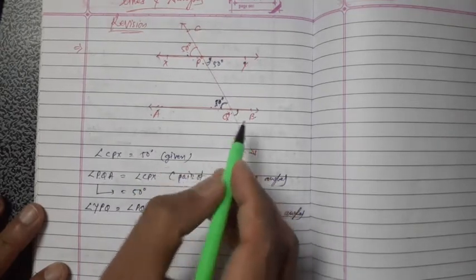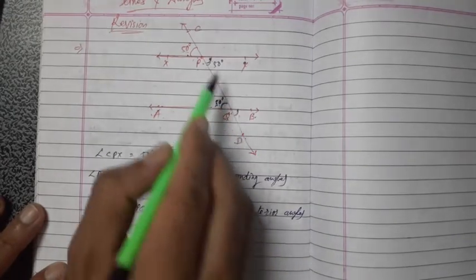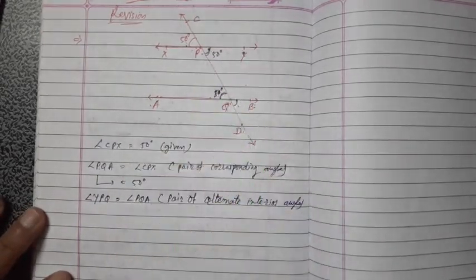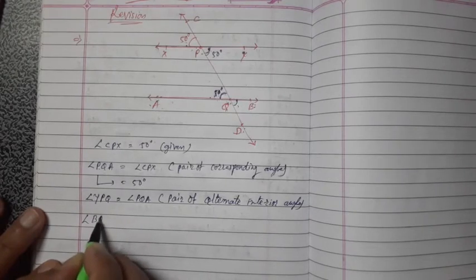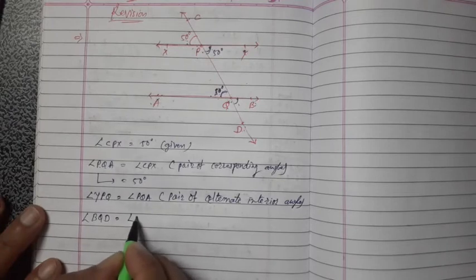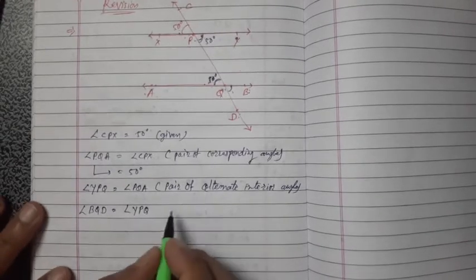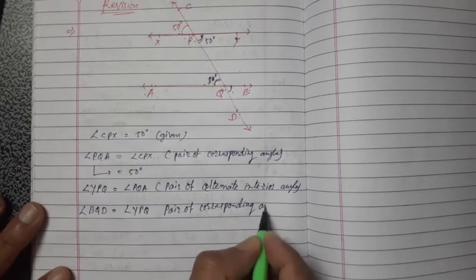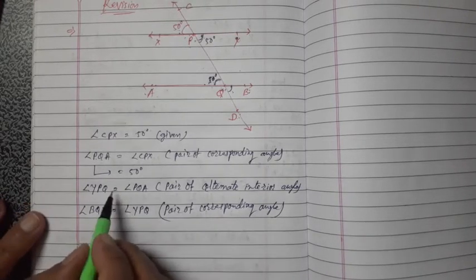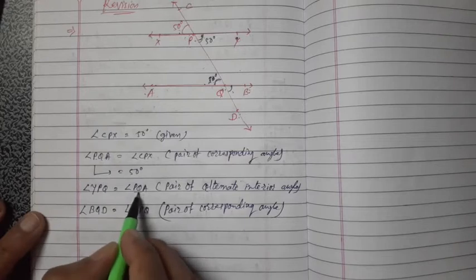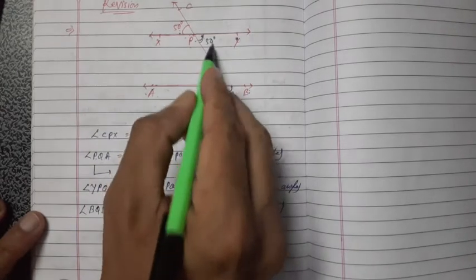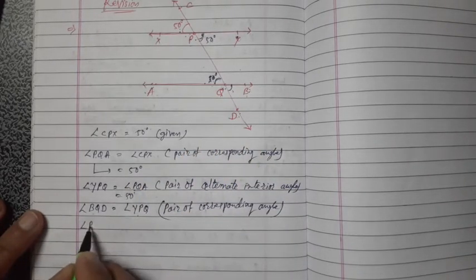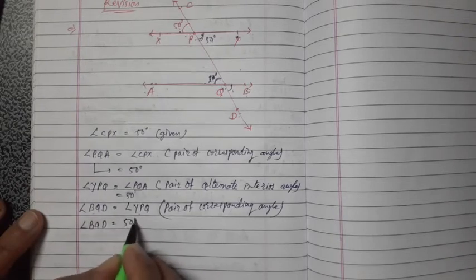They are a pair of alternate interior angles, so angle YPQ is also 50 degrees. Now YPQ and BQD — one is interior, one is exterior, both on the same side of the transversal — so they are a pair of corresponding angles. Therefore angle BQD = angle YPQ = 50 degrees.